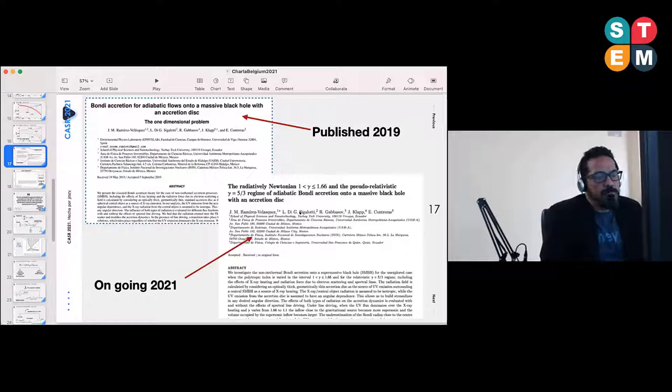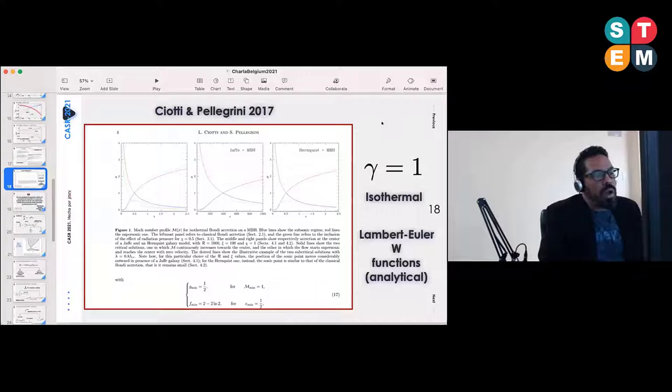We are studying these systems, one based on a published paper already in 2019, and this is an ongoing research where we are extending some of our techniques to more regimes of gamma larger than one, and we are trying to make some comparisons we believe are important for the case of this pseudo-relativistic potential for the adiabatic Bondi accretion processes involved.